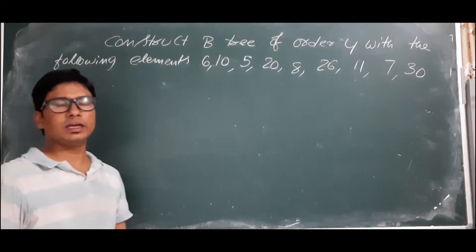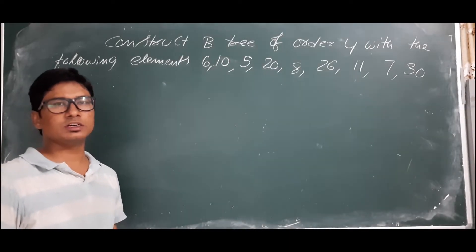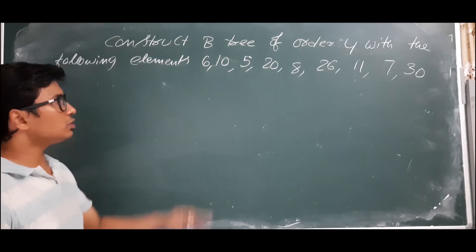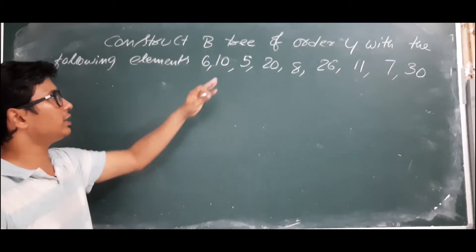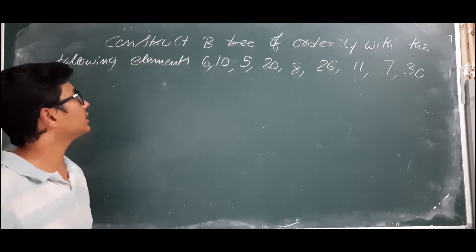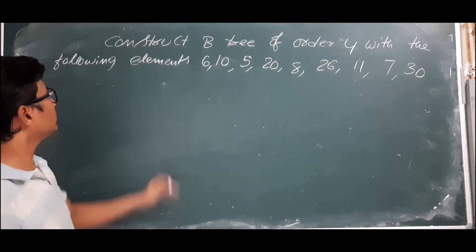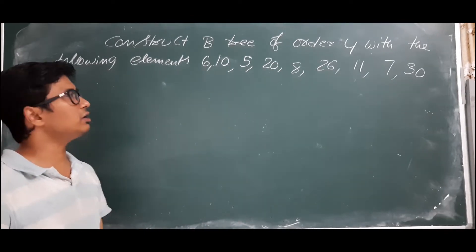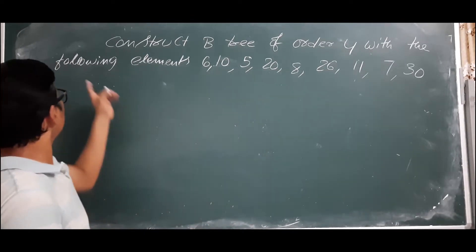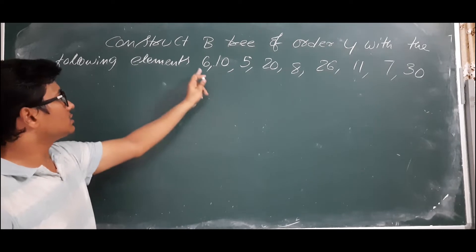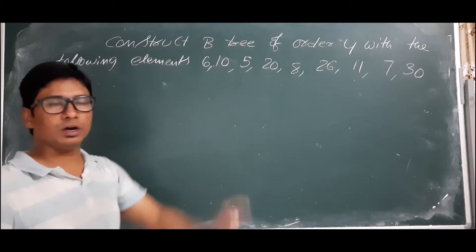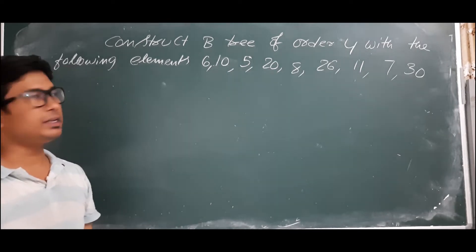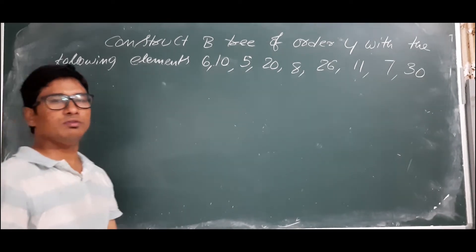Good morning students. In the earlier video I discussed the steps for constructing a B-tree. In this video we will discuss one example for better understanding. The question is: construct a B-tree of order 4 with the following elements — 6, 10, 5, and so on. Using these elements we have to construct the B-tree where the order is equal to 4.